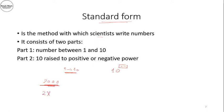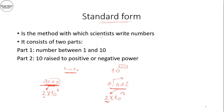For example, if I want to write 2000 in standard form, I write 2 × 10³. For 0.002, I write 2 × 10⁻³. If the decimal point moves to the right, the power of 10 is negative; if it moves to the left, the power of 10 is positive.